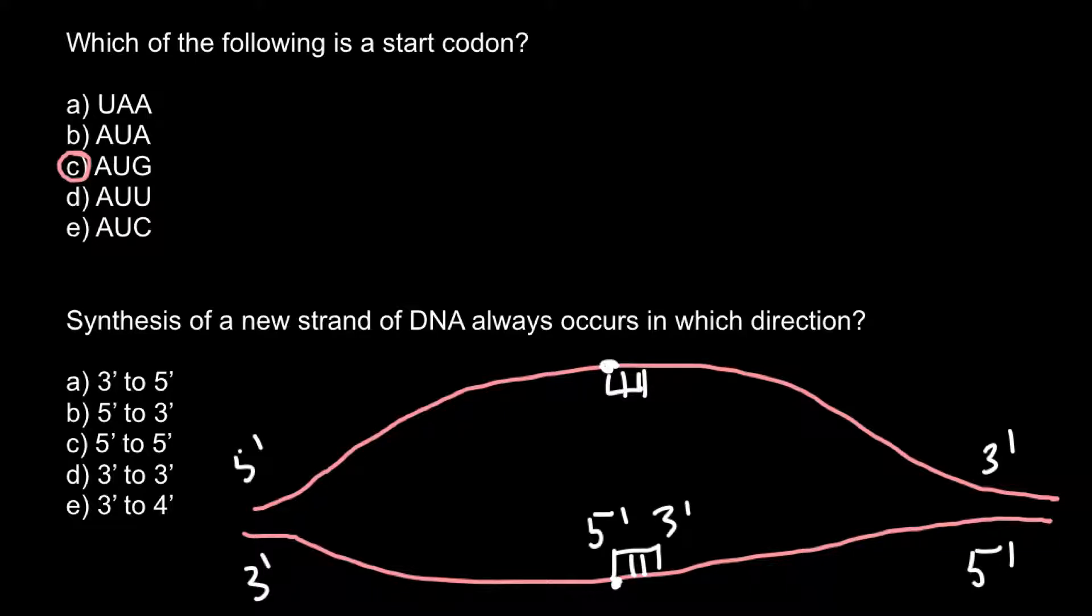And replication always goes in one direction from five prime end to three prime end. So in this direction new strand of the DNA would grow continuously.